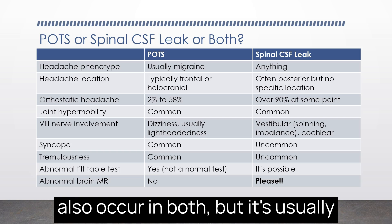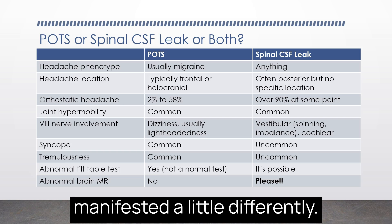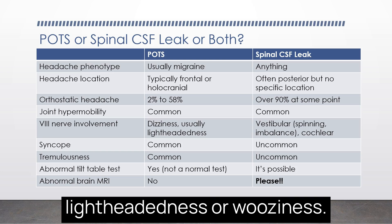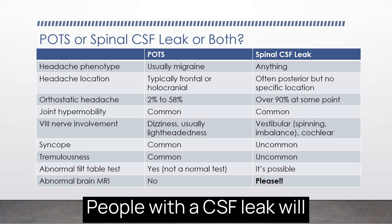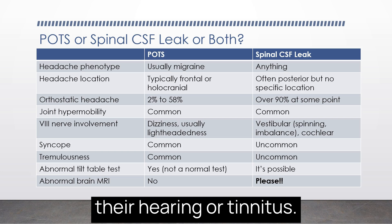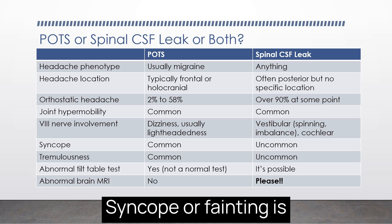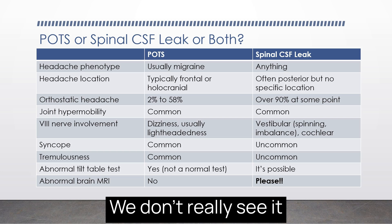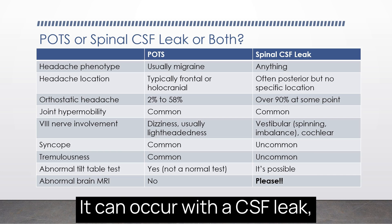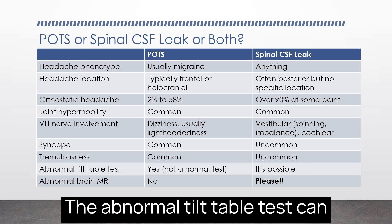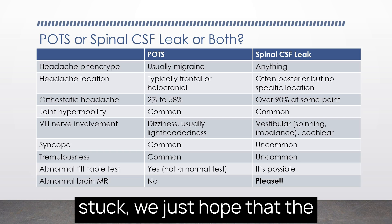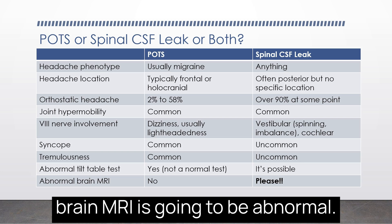Eighth nerve involvement can occur in both conditions but manifests differently. People with POTS usually experience dizziness they describe as lightheadedness or wooziness, while people with a CSF leak describe a sensation of imbalance or spinning and may also have problems with hearing or tinnitus. Syncope and tremulousness are common with POTS but not typically seen with CSF leak. An abnormal tilt table test can occur with either condition, and when really stuck, we hope the brain MRI will be abnormal — though unfortunately that doesn't always happen.